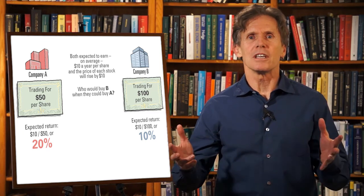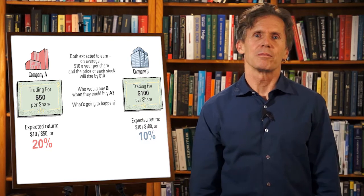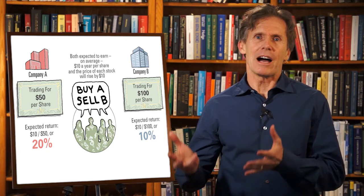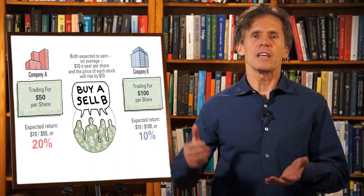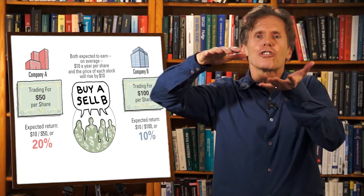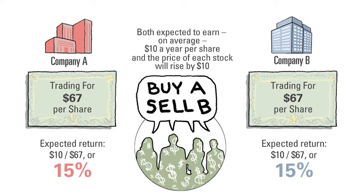Who would buy B when they could buy A? What's going to happen? Investors are going to buy shares of company A and sell shares of company B until the share prices and the expected returns of both companies are about the same. If the price of A rises to $67 and the price of B falls to $67, both companies will be earning a return of $10 divided by $67, or 15%.